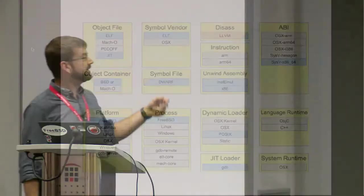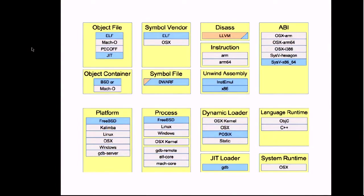Looking at a close-up of the plugins, the ones highlighted in blue are those that either had to be written for FreeBSD or that FreeBSD heavily relies on. The process plugin is probably the most important one — it provides register definitions and anything specific to a FreeBSD debuggee. The platform plugin represents running LLDB on a FreeBSD host, handling things like copying files to or from the host system.